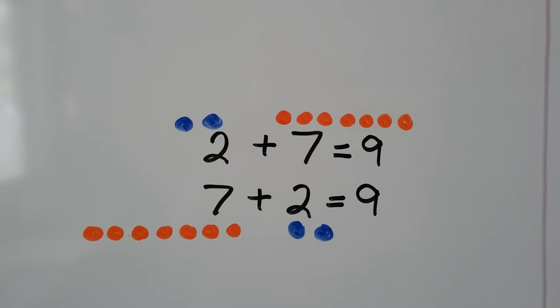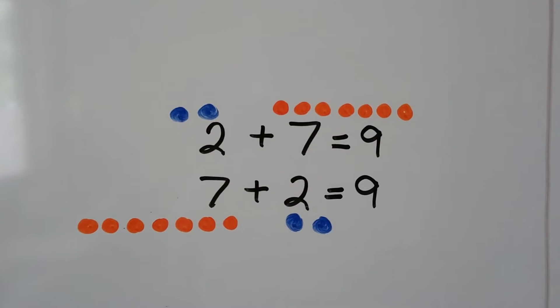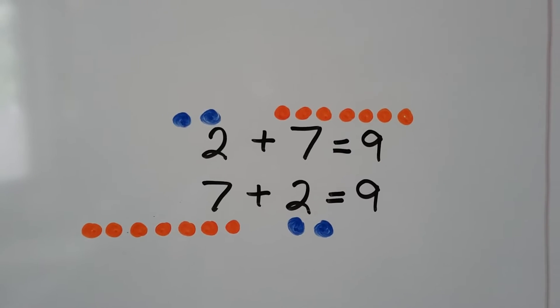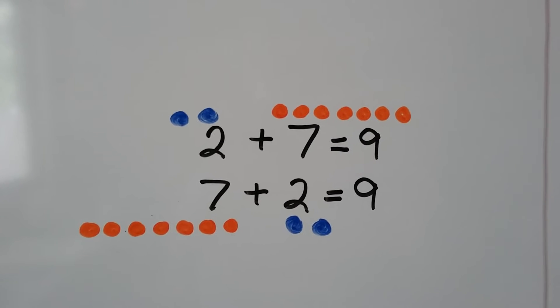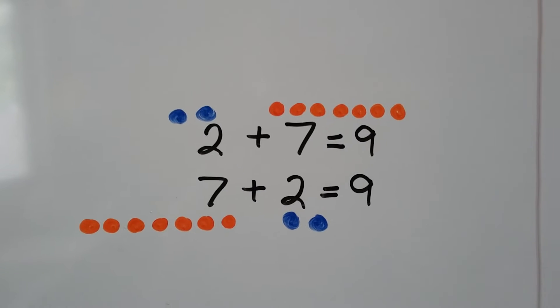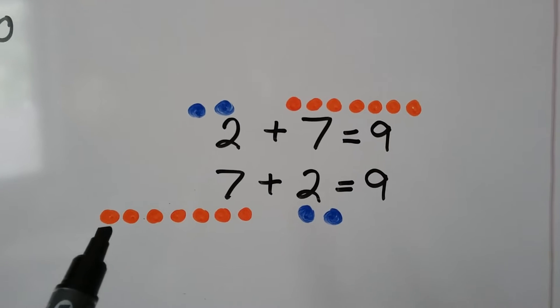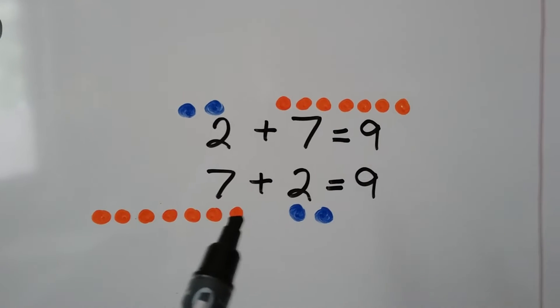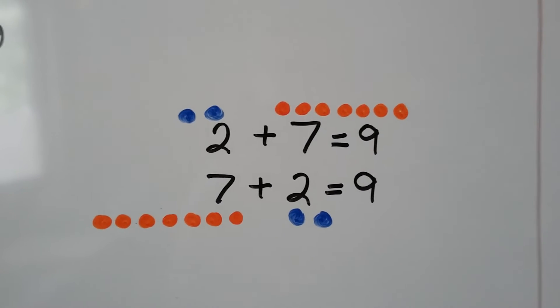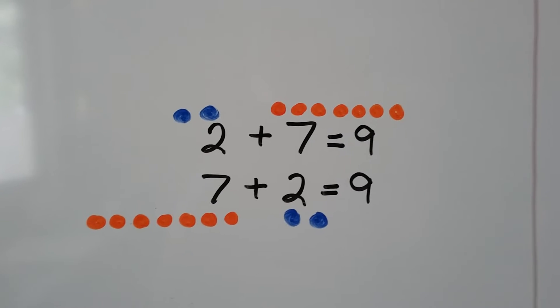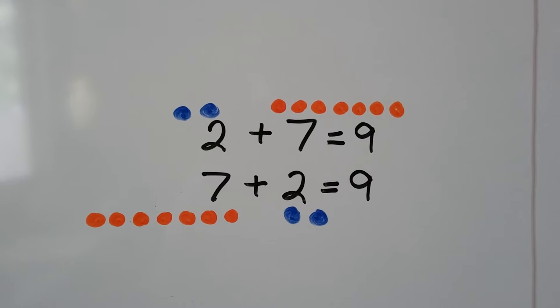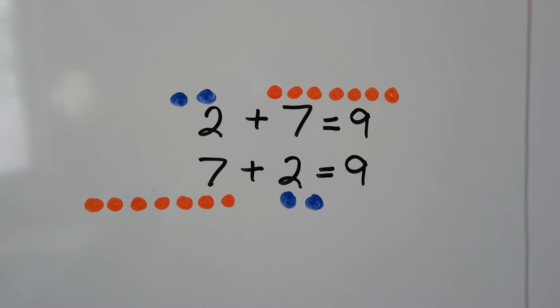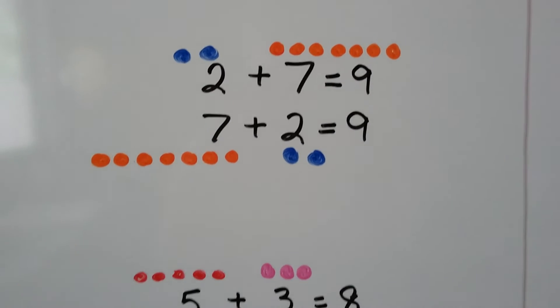Here we have two plus seven equals nine, and seven plus two equals nine — seven, eight, nine. Either way we add them, it's going to be the same sum.